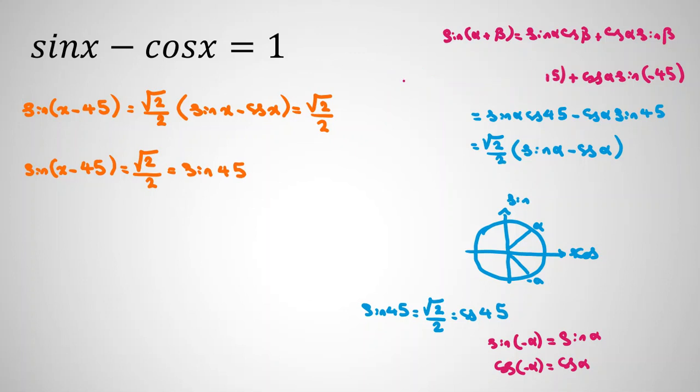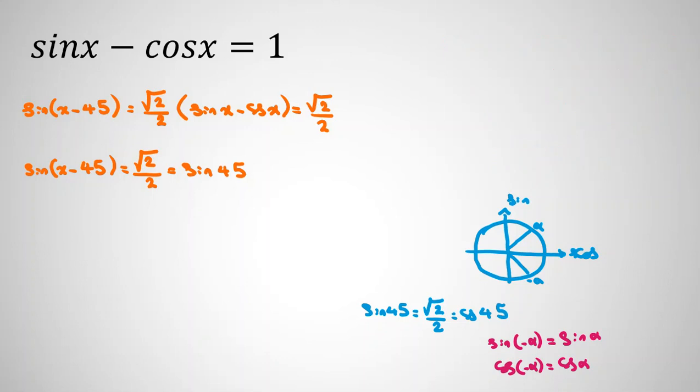If sin of alpha equals sin of beta, we want to find the relationship between alpha and beta. You can say alpha equal to beta plus 360k and alpha equal to 180 minus beta plus 360k, which k is integer.